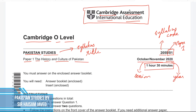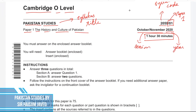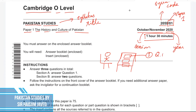Once you are sitting in the examination hall, the invigilator will present you with three documents. The first one is your question paper — the document we are observing right now. The second document is your answer booklet, and the third document is the insert. So these are the three documents you will see when you sit in the exam.